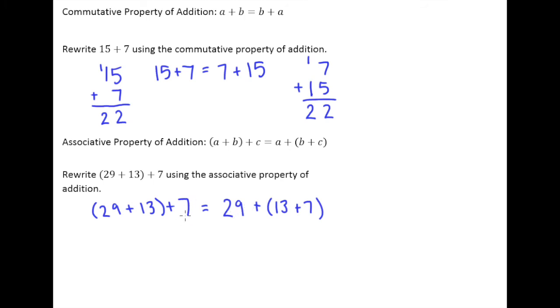And here's where you can see the practicality of this property. 29 plus 13 would not be one that we want to do in our head. We would want to set up the vertical addition for that and then add 7 afterward. But take a look at this.